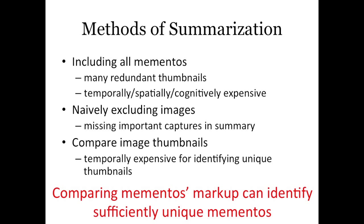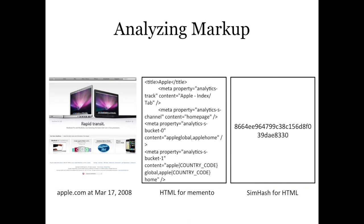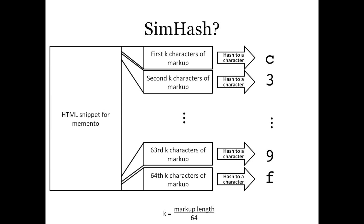What we actually came up with in our research was to take the text content of these different mementos, compare them, and come up with a summarization based on the HTML of the pages. For an individual Apple memento, we can crawl it and get solely the HTML without fetching all the other associated resources. From that, we generate a SimHash value. A SimHash value is a means of fingerprinting the markup, meant to identify similarities between different text contents rather than differences like other hashes. In this project we use a 64-bit SimHash to compare different mementos.